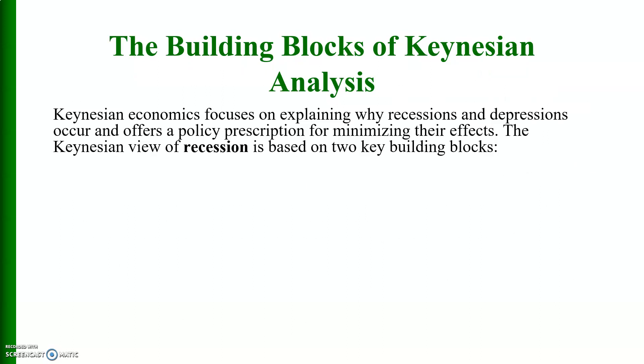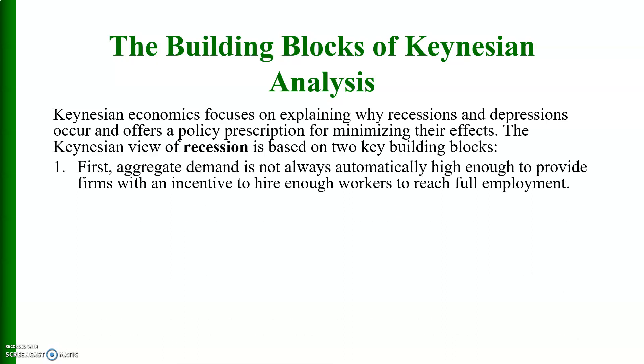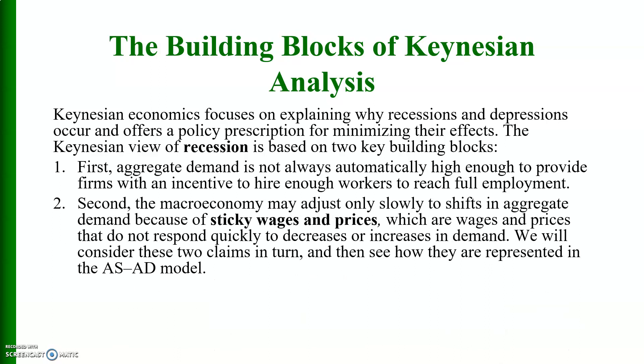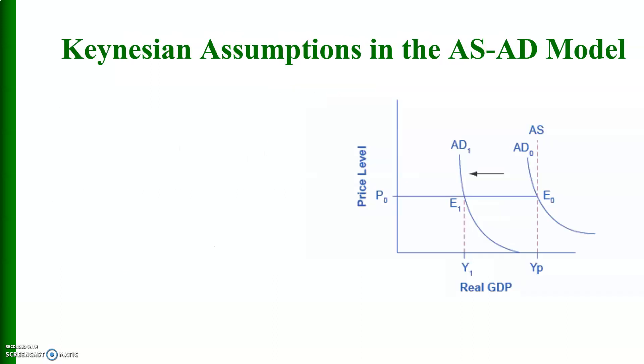The basic building blocks of Keynesian analysis: Keynesian economics focuses on explaining why recessions and depressions occur and offers a policy prescription for minimizing their effects. The Keynesian view of recession rests on two key building blocks. First, aggregate demand is not always automatically high enough to provide firms an incentive to hire enough workers to reach full employment. Second, the macroeconomy may adjust only slowly to shifts in aggregate demand because of sticky wages and prices — wages and prices that do not respond quickly to decreases or increases in demand.